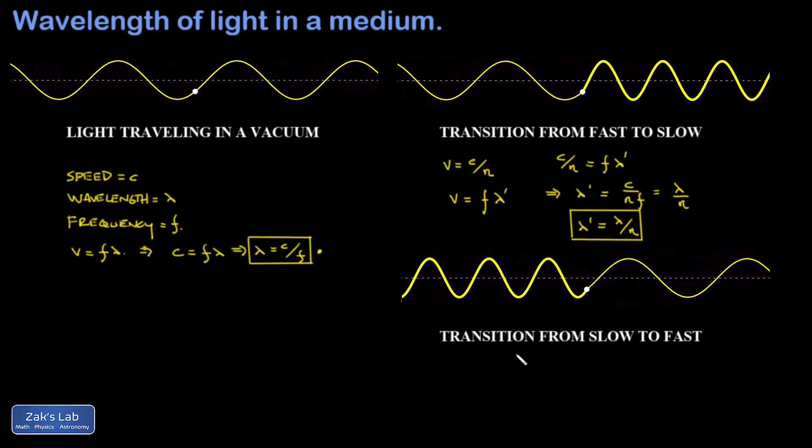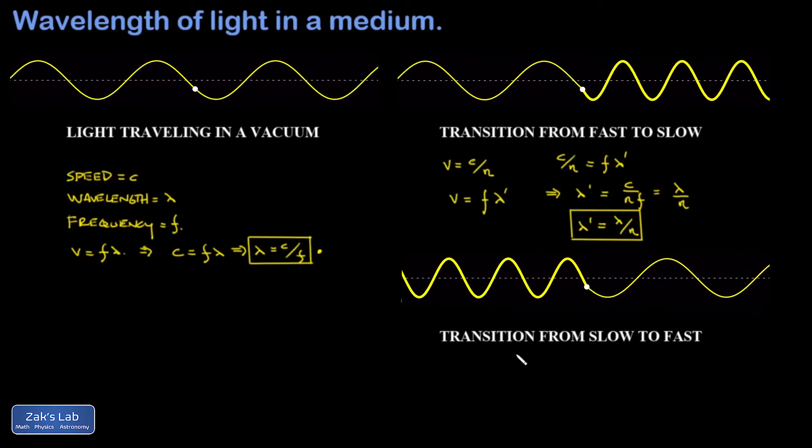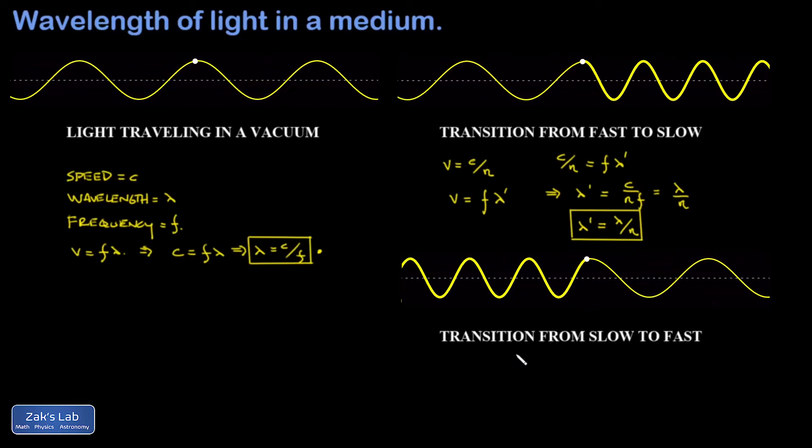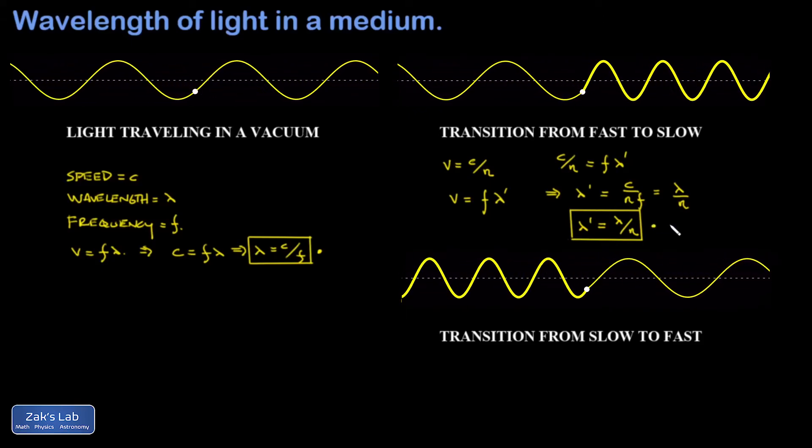And it's just the wavelength that changes when the speed changes. So no matter what transitions occur as a light wave is passing through different media, the frequency is the thing that stays the same. And then the wavelength in any particular medium is just given by this simple formula: the wavelength in vacuum divided by the index of refraction.